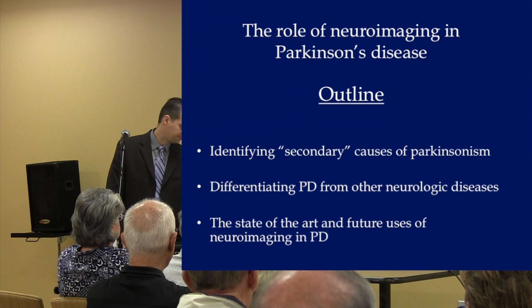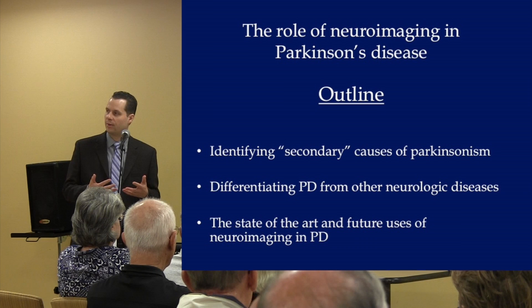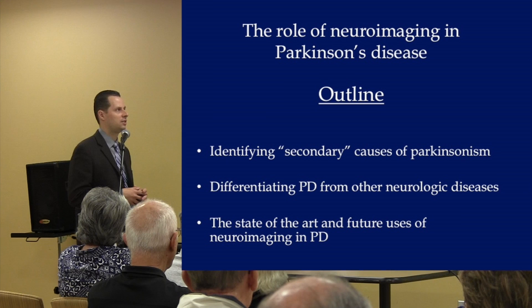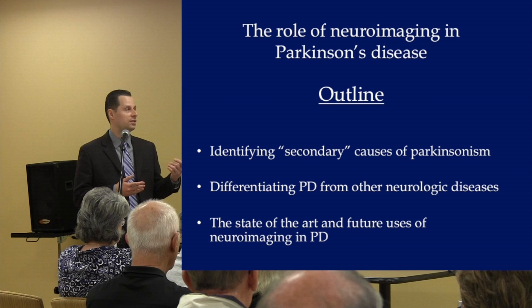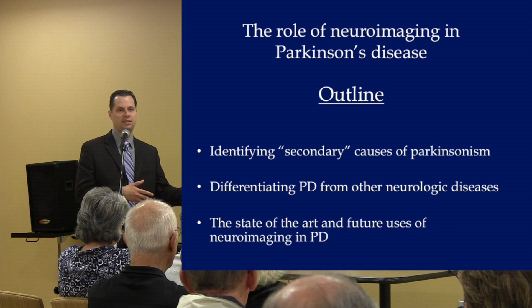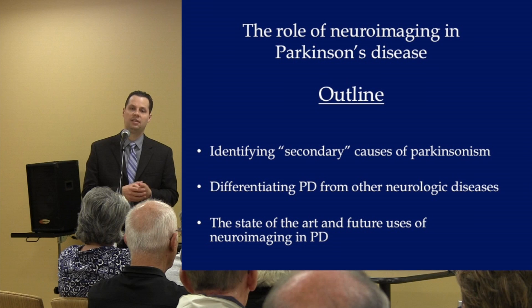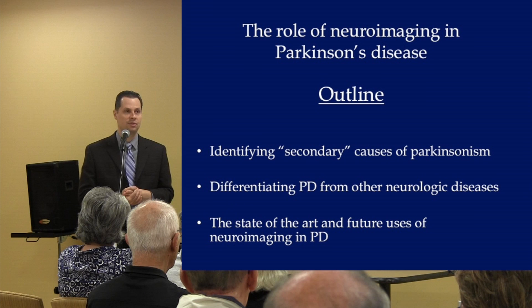When thinking about the role of neuroimaging in Parkinson's disease, a couple of things stand out as a framework. The first is identifying secondary causes of Parkinson's disease or Parkinsonism. Parkinson's disease is the actual disease with the actual pathology that causes these symptoms. There are lots of other processes that can happen in the brain that result in symptoms of Parkinsonism — the rigidity, slowness, postural instability, and tremor — so we'll talk about the role of neuroimaging in those cases.